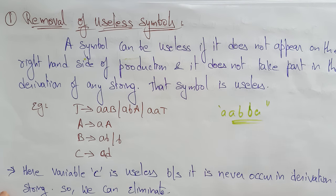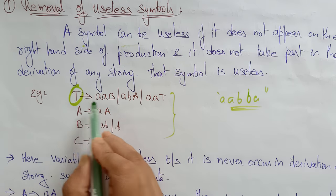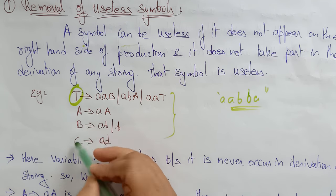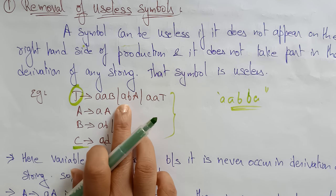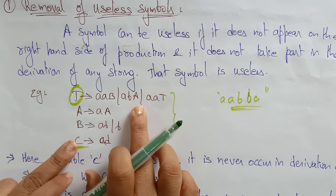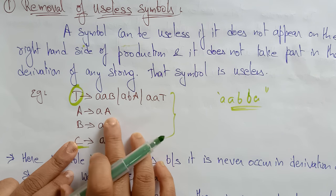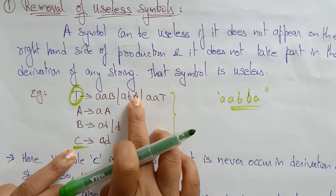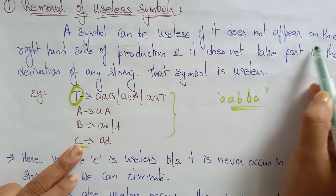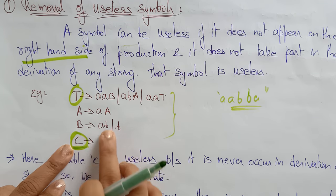That is the removal of useless symbols. Here I have taken one production. In this context-free grammar, how can I identify the useless symbols? Here T is the start symbol. The start symbol has to include all the non-terminals — here A is present, B is present, and T itself is also considered, but C is not considered. In the start symbol there is no C, and in the remaining productions the right-hand side is also not having the C non-terminal.